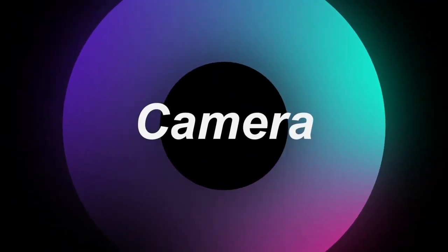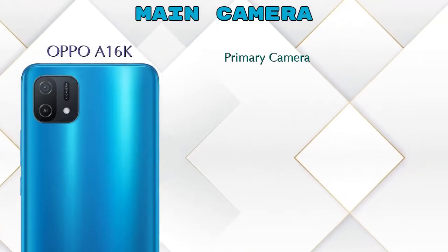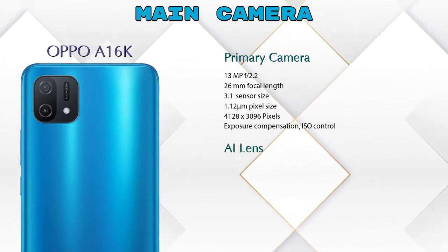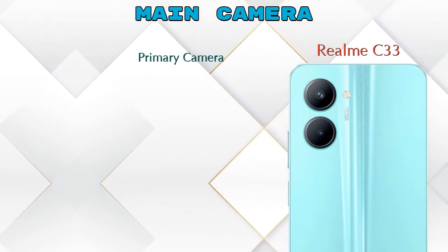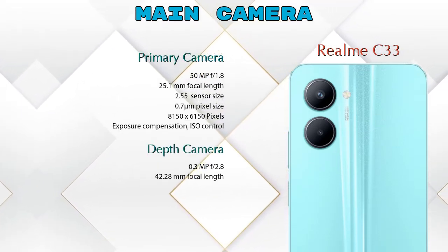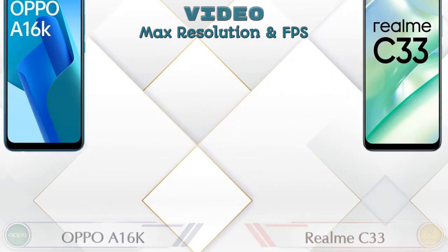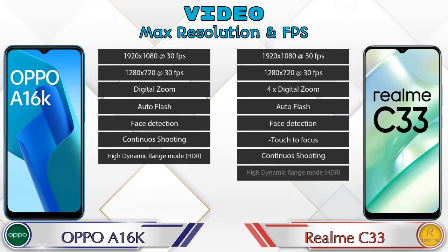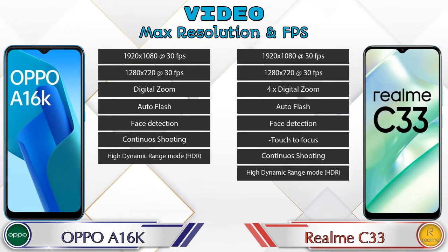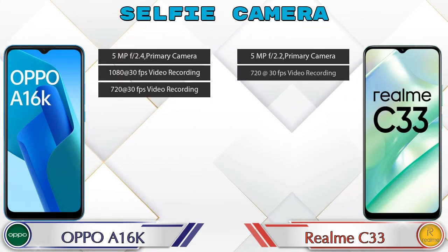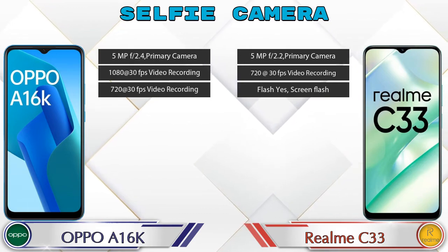Let's see the detail about our favorite feature: camera. First, talking about the rear camera — the A16k has two cameras: a primary camera and an AI lens. The Realme C33 also has two cameras: a primary camera and a depth camera. Talking about video camera, the A16k has 7 and the Realme C33 has 8 different types of features available. For the front selfie camera, both phones have a single camera with three different features available.